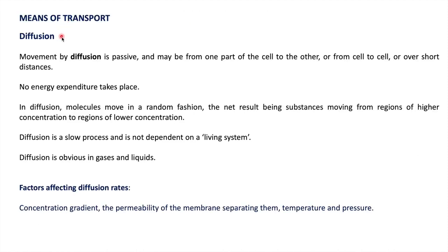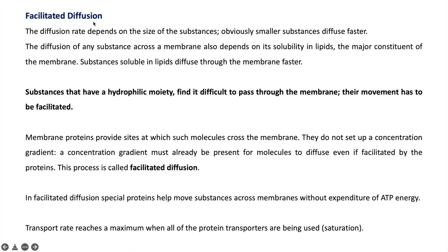The first transportation mechanism is diffusion. Movement by diffusion is a passive process — it doesn't require energy. It occurs over a short distance, such as from one part of a cell to another cell. Movement of substance occurs from higher concentration to lower concentration. Diffusion is a slow process and is not dependent on a living system. The best media for diffusion are gases and liquids. Factors affecting diffusion rates include concentration gradients, the permeability of the membrane separating them, temperature, and pressure.